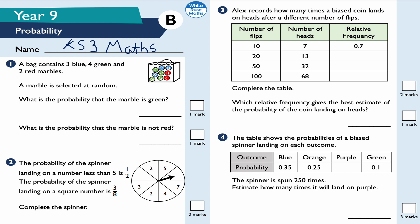Question one: a bag contains three blue, four green, and two red marbles. A marble is selected at random. What is the probability that the marble is green? Well, there are four green marbles out of a total of nine, so the answer is four ninths.